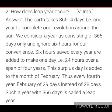Question 2: How does a leap year occur? Answer: The Earth takes 365 and one-quarter days to complete one revolution around the Sun. We consider a year as 365 days only and ignore the six hours for convenience. The six hours saved every year are added to make one full day of 24 hours over a span of four years. This surplus day is added to February, giving it 29 days instead of 28; such a year with 366 days is called a leap year.